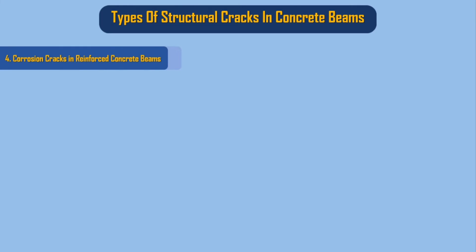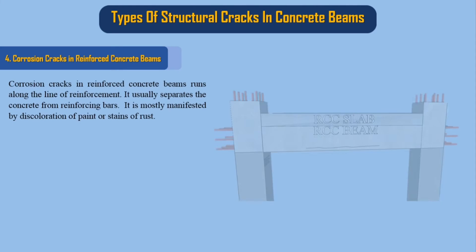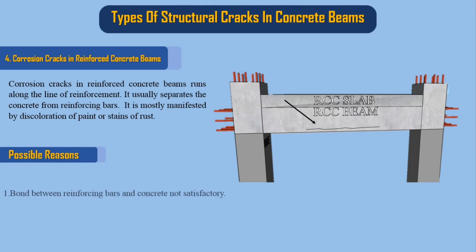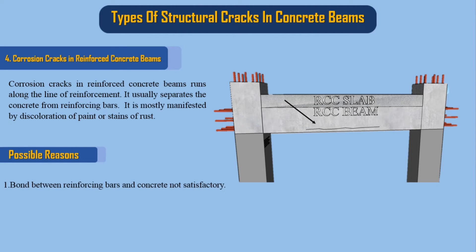Corrosion cracks in reinforced concrete beams run along the line of reinforcement and usually separate the concrete from the reinforcing bars. This is mostly manifested by discoloration of paint or stains of rust. Possible reasons: 1. Bond between reinforcing bars and concrete is not satisfactory. 2. May be due to corrosion of bars or fire damage.